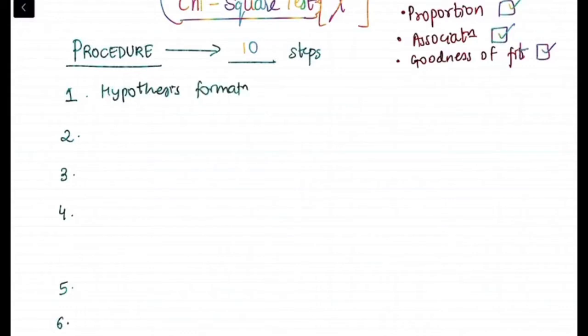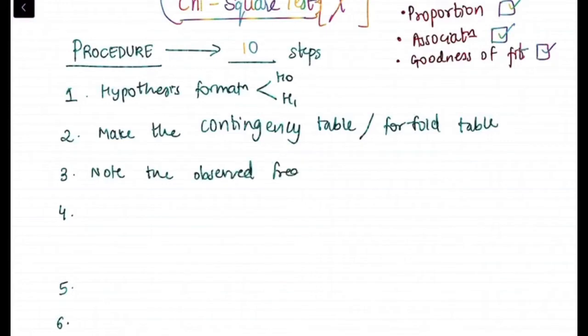Procedure: there are 10 steps in this test. First of all there is hypothesis formation, H0 and H1, null hypothesis and the other one alternate hypothesis. Then second step is make the contingency table or fourfold table.